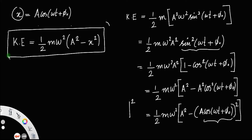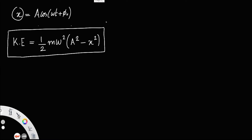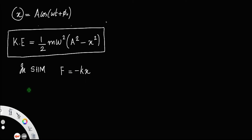Now we find the expression for potential energy. In SHM, force is equal to -kx. Force is proportional to displacement, but force and displacement are in opposite directions, so we put the minus sign. So f = -kx.